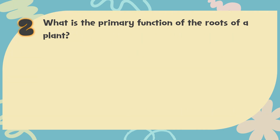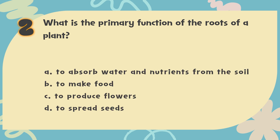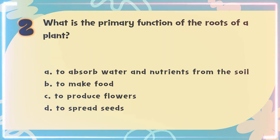Number 2. What is the primary function of the roots of a plant? The choices are: A. To absorb water and nutrients from the soil. B. To make food. C. To produce flowers. D. To spread seeds.